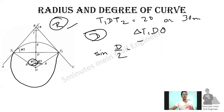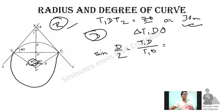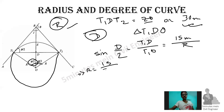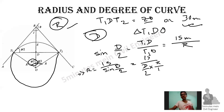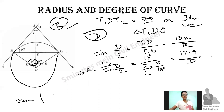In triangle T1DO, sin(D/2) is equal to T1D divided by T1O. Working from a chord of 30 metres, T1D is 15 metres, and T1O is equal to the radius R. Then R equals 15 divided by sin(D/2). Since sin(D/2) is approximately equal to D/2 in radians, R equals 15 divided by (D/2), giving R equals 1746 divided by D.